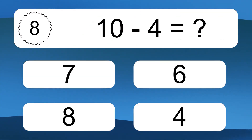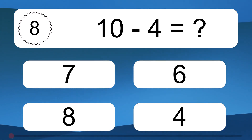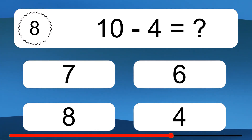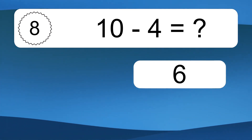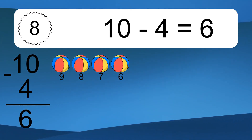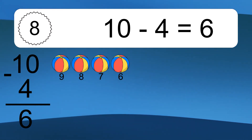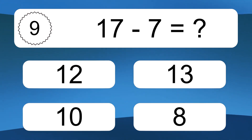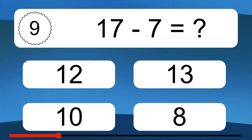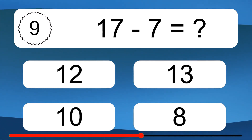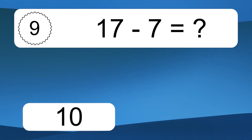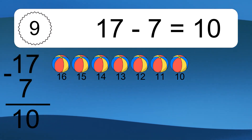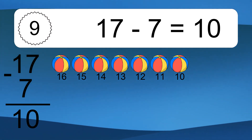10 minus 4 equals what? 10 minus 4 equals 6. Let's count it: 9, 8, 7, 6. 17 minus 7 equals what? 17 minus 7 equals 10. Let's count it: 16, 15, 14, 13, 12, 11, 10.